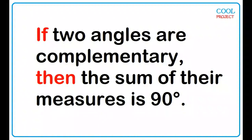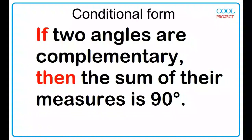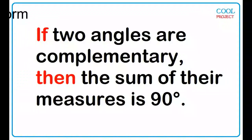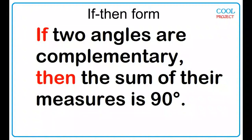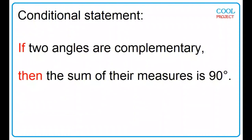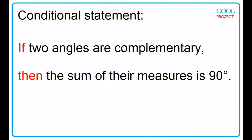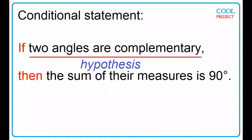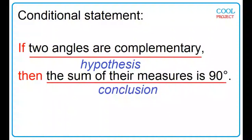If two angles are complementary, then the sum of their measures is 90 degrees. The statement is written in conditional form, or if-then form. A conditional statement has two parts: the hypothesis and the conclusion. 'Two angles are complementary' is the hypothesis. 'The sum of their measures is 90 degrees' is the conclusion.